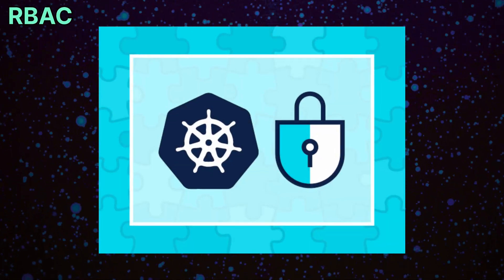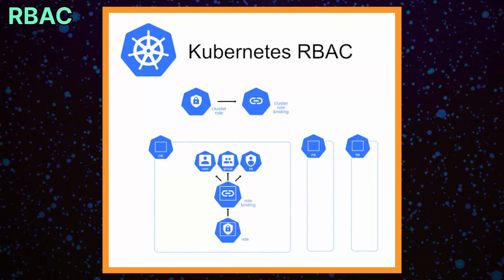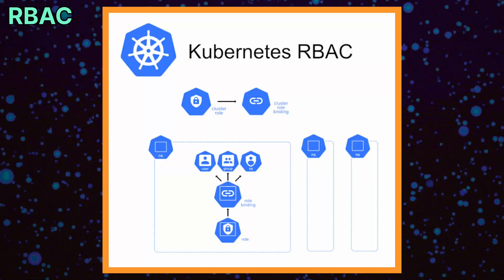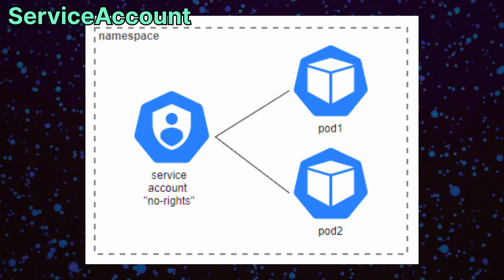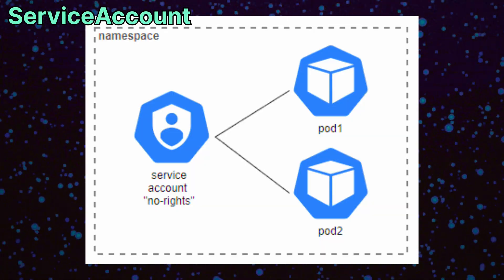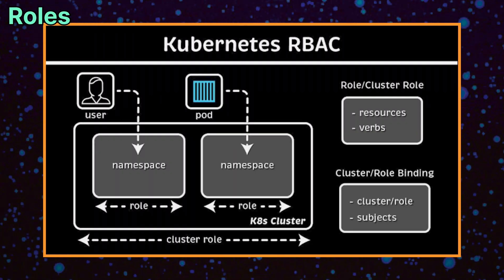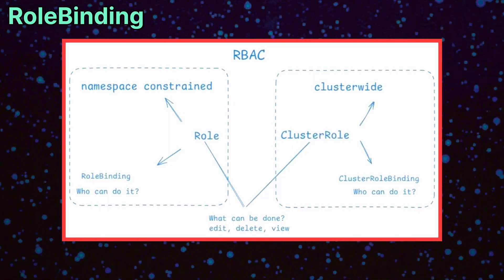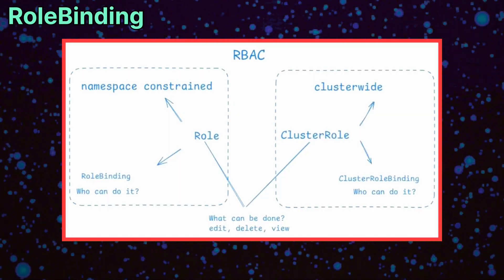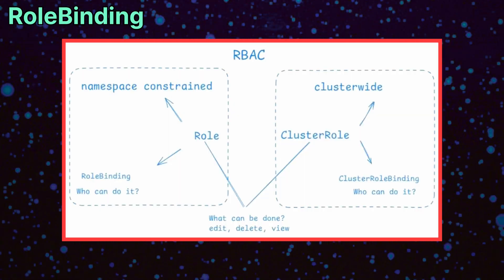For security and access control, Kubernetes uses RBAC, or role-based access control. Service accounts are used by pods to access the Kubernetes API. Roles and cluster roles define what actions are allowed, and role bindings or cluster role bindings assign those permissions to users or pods.